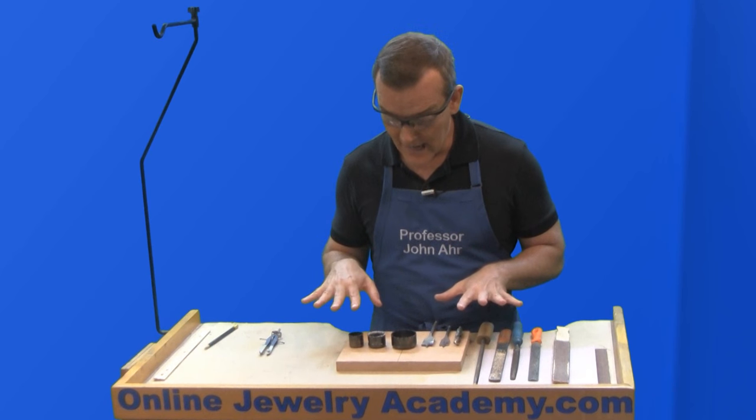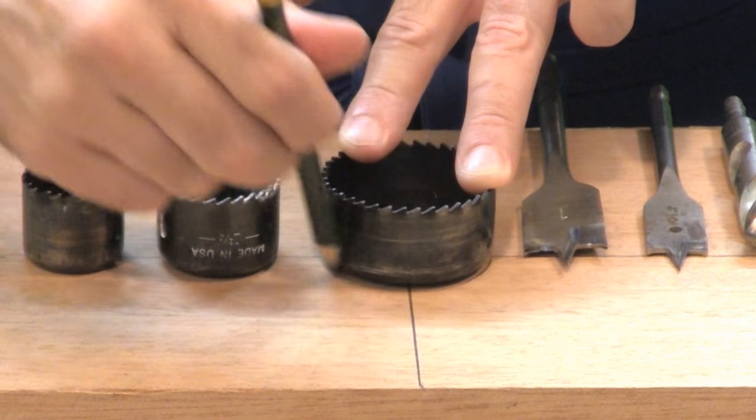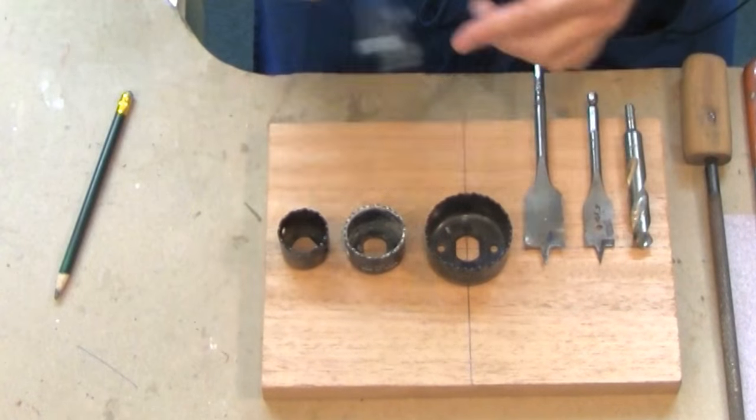So once they're laid out, it's pretty easy to trace around ones like this. You can just go around it. These may require that you use the compass.